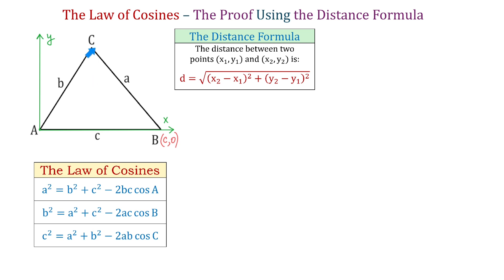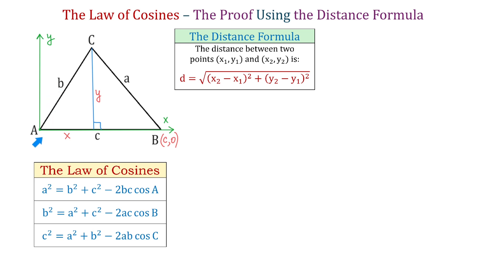To find the coordinates for point C, we need to find how far to the right we have to move and then how far up. Therefore, from point C, we will draw a perpendicular down to the x-axis. To find the coordinates of point C, we would have to move x units to the right and then y units up. Therefore, using this right triangle, we will write x and y in terms of the hypotenuse B and angle A.